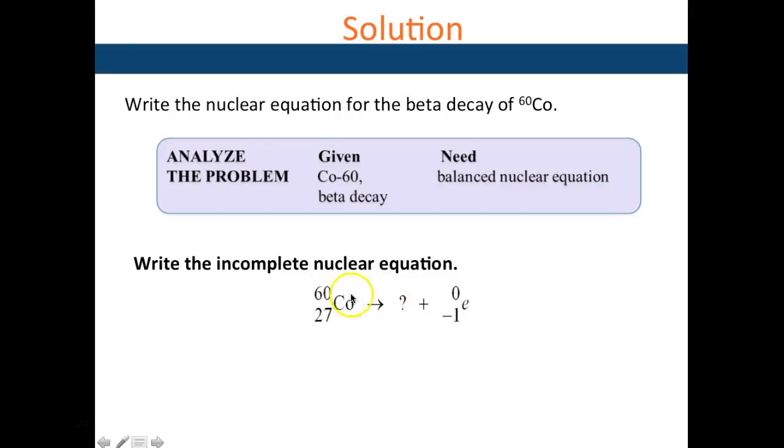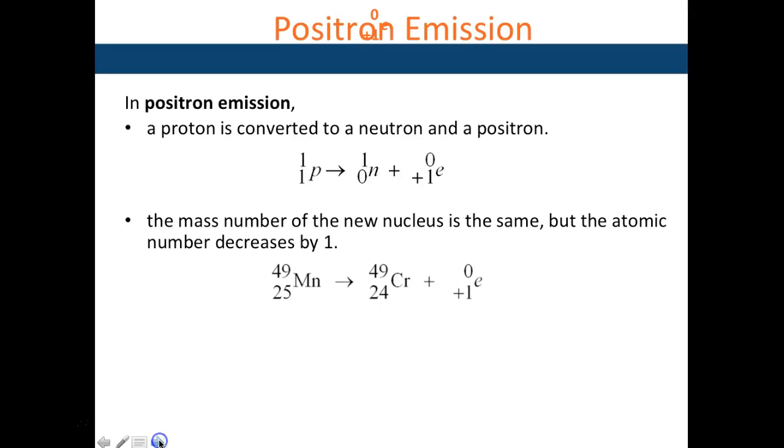In a positron emission, the new element is one place to the left of the original element, and the mass is the same.